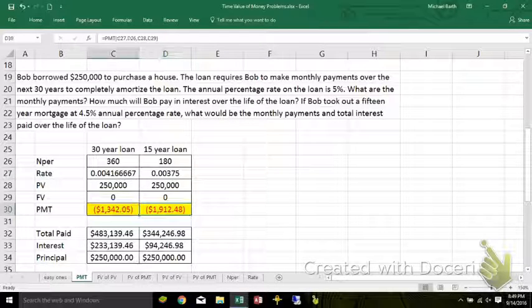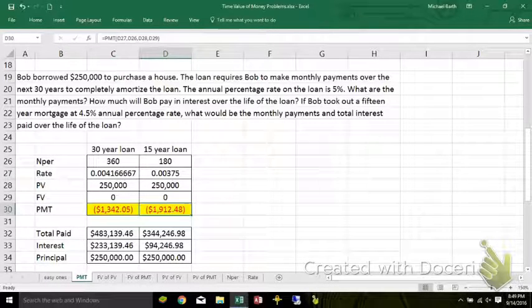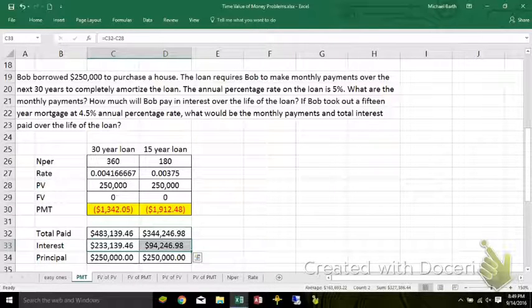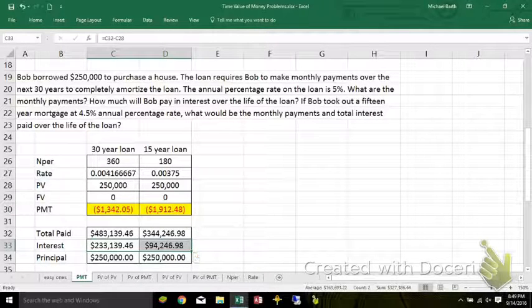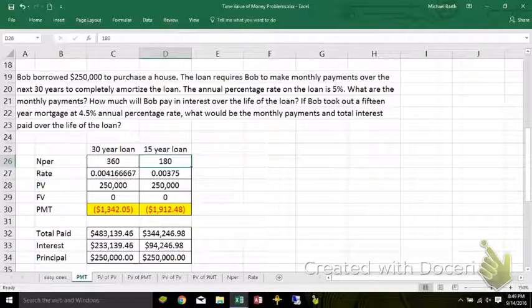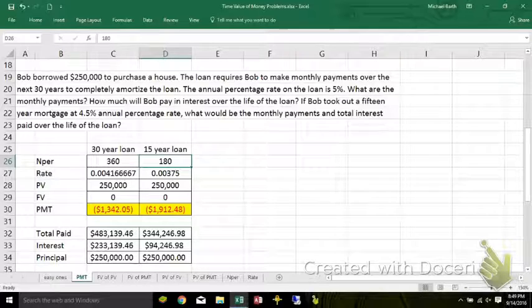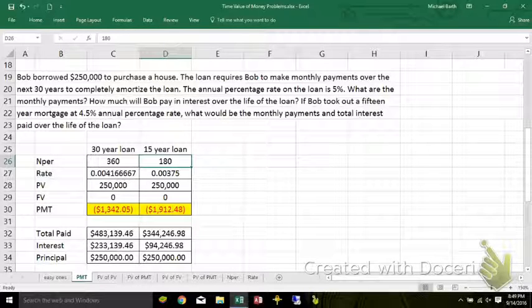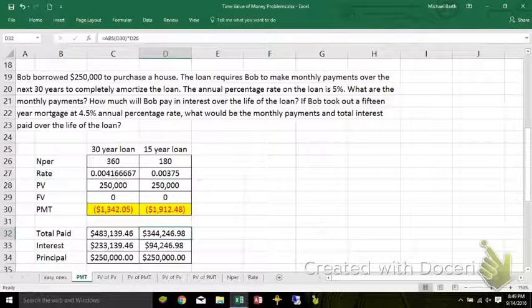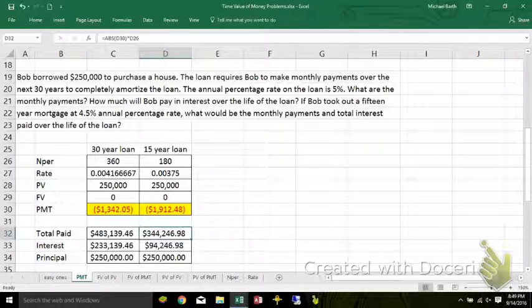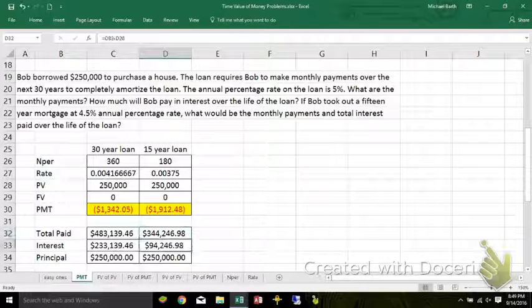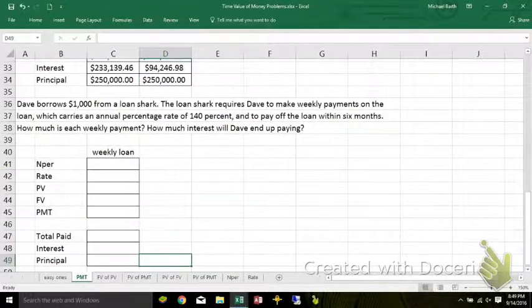The payments are higher, considerably higher, but you pay considerably less interest in total. That's because you're only making 180 payments instead of 360. You pay off the loan faster, you don't pay interest once you get the loan paid off. So, quick way to save $140,000 here.